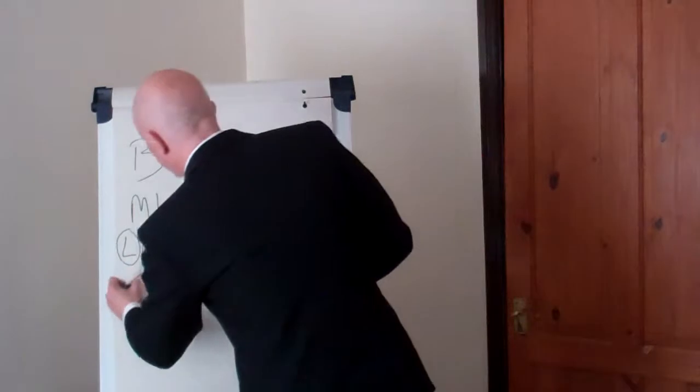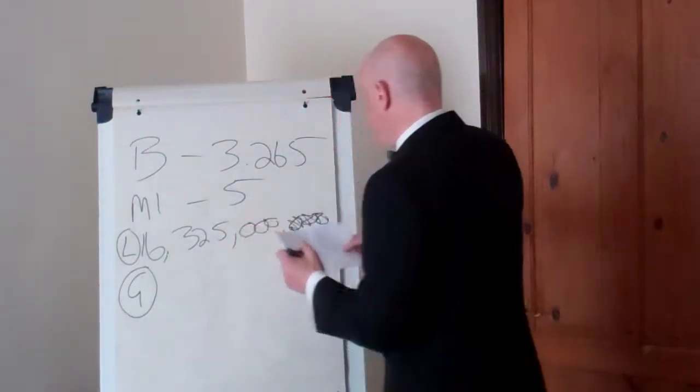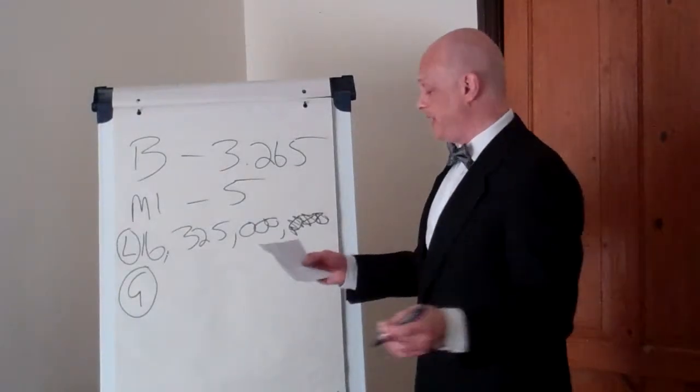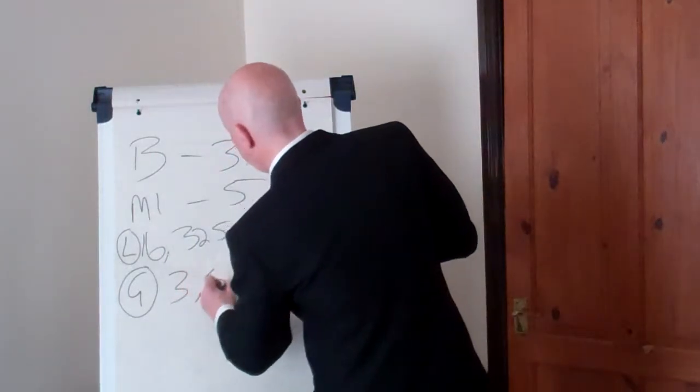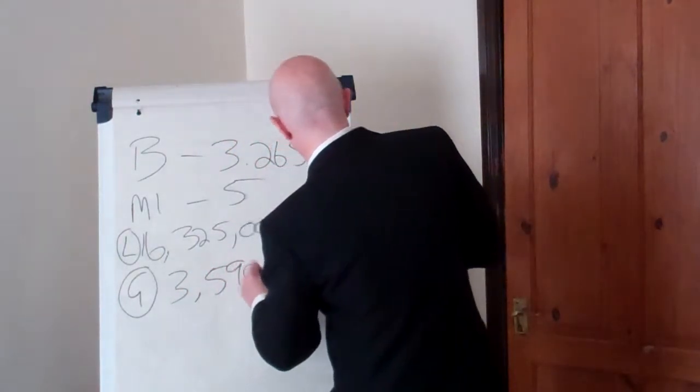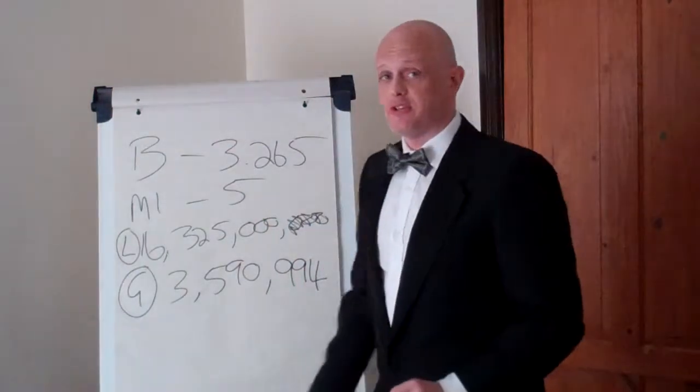Now, we turn into gallons, because this is important for the final bit we're going to do. Now, gallons, I can't remember how we did this, but I looked it up, imperial gallons, we got left with 3,590,994 gallons of jizz.